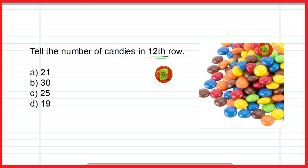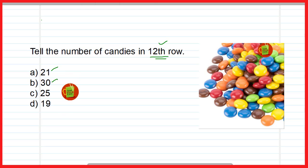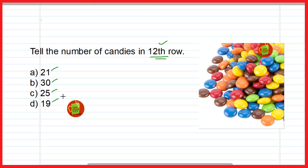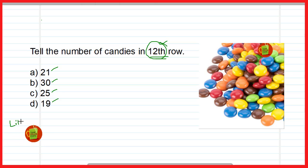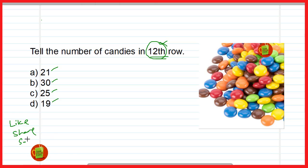Now tell the number of candies in the 12th row. Friends, you have to find the total number of candies in the 12th row — is it 21, 30, 25, or 19? Solve it yourself and write your answer in the comments box. So friends, today we will stop here. I hope you enjoyed this video — if yes, please like the video, share it with your friends, and do not forget to subscribe to the channel. Thank you very much for watching.